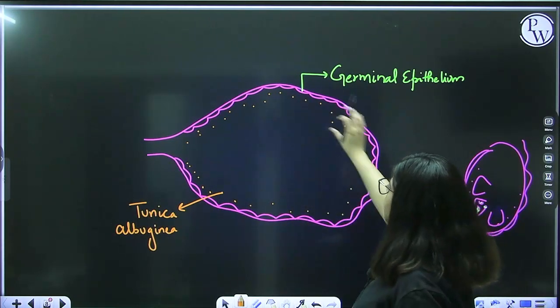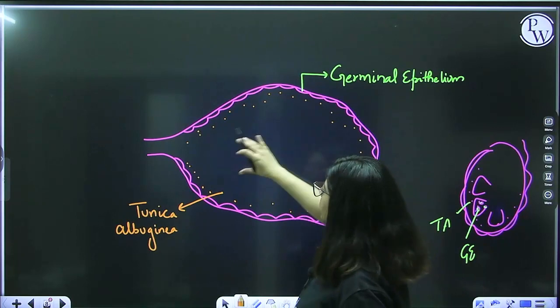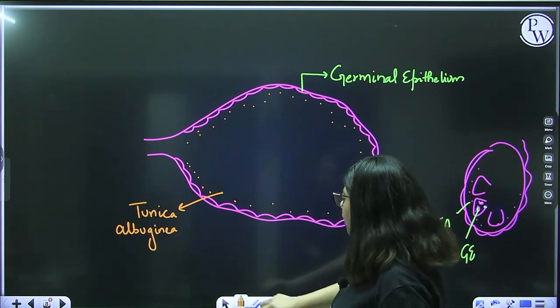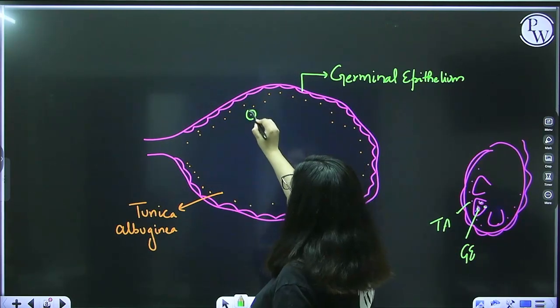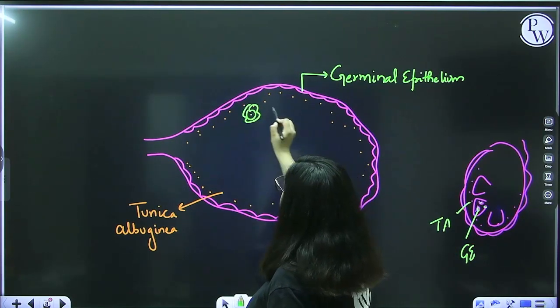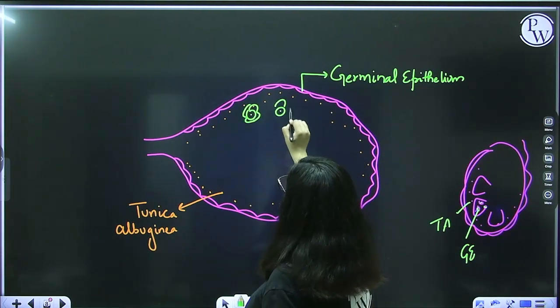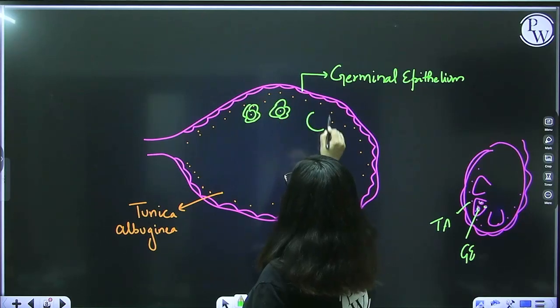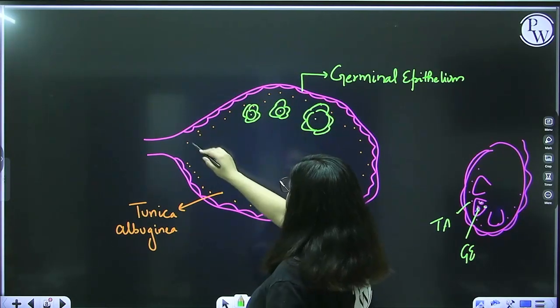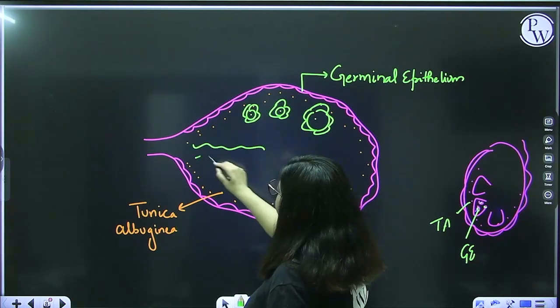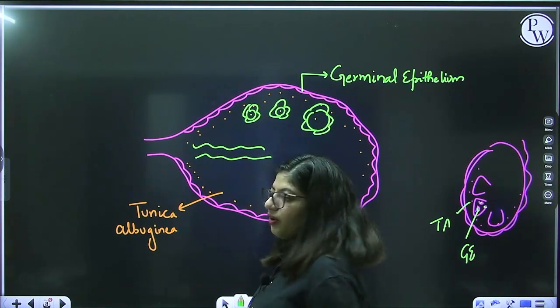So the ovary has germinal epithelium on the outside and tunica albuginea inside. The outer area is the cortex, the inner area is the medulla. The cortex contains follicles at different stages, while the medulla contains blood vessels.